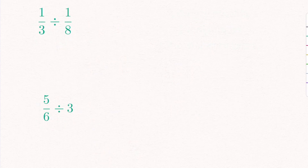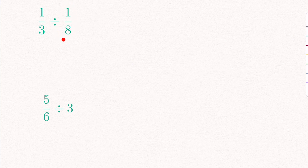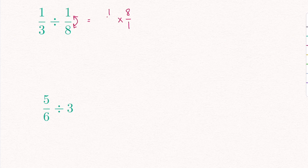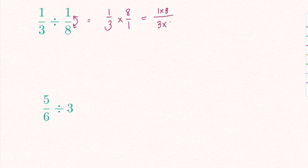In this example, we have 1 over 3 divided by 1 over 8. We will change the division sign to a times, and multiply by the reciprocal of the second fraction. The reciprocal of 1 over 8 — making it upside down — becomes 8 over 1. The first fraction of 1 over 3 stays as it is. So I can rewrite this as 1 over 3 times 8 over 1. I times the numerators: 1 times 8, and the denominators: 3 times 1. So it becomes 8 over 3.